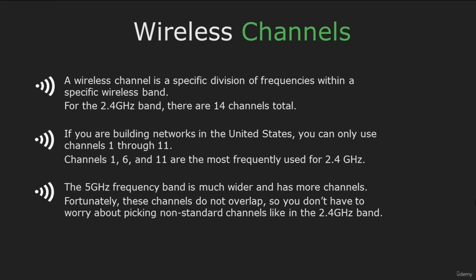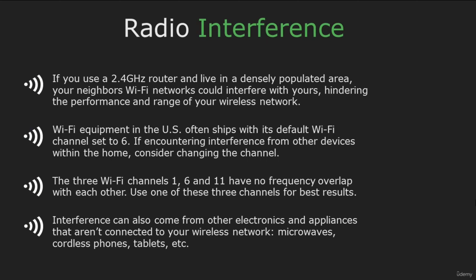Now that you know what channels and different bands are, you will need to know how to avoid radio interference. If you live in a populated area, your neighbor's Wi-Fi could interfere with yours. So change the default Wi-Fi channel and use 1, 6, and 11. These three channels have no frequency overlap. Interference can also come from other electronics such as microwaves, cordless phones, tablets and so on.